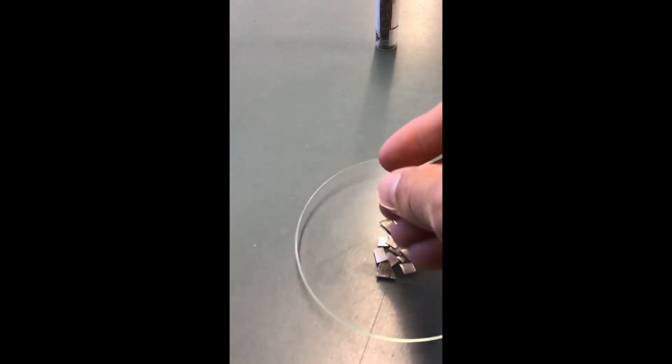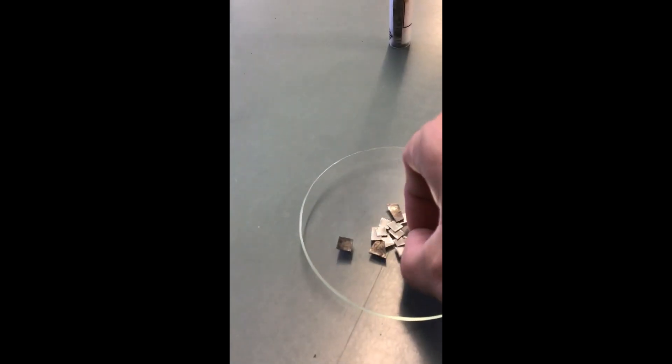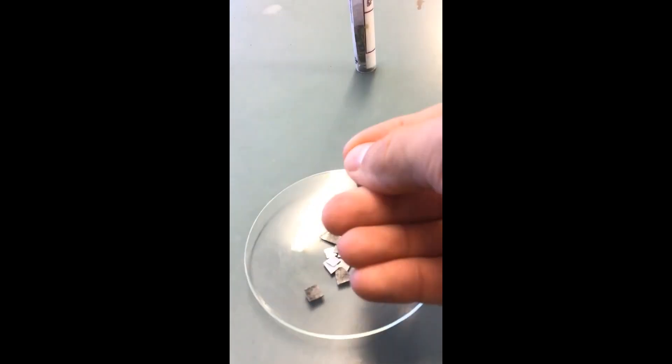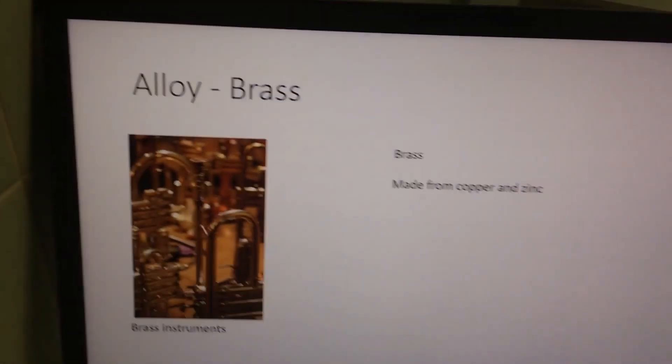Let's have a look at another example of a metal, zinc. Here we have some strips of zinc. So I can bend this. This one's a little bit harder to bend. That can still be bent, shiny, malleable, ductile. Now where can we see zinc in our day-to-day lives?